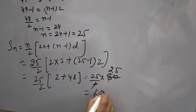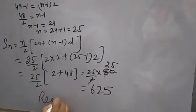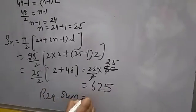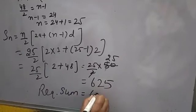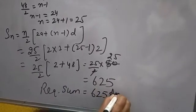25 into 25 is 625. So required sum. Means sum of odd numbers between 0 and 50 will come 625. This is the answer. Thank you.